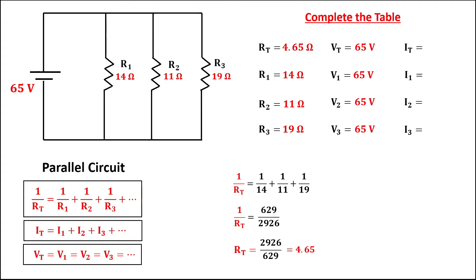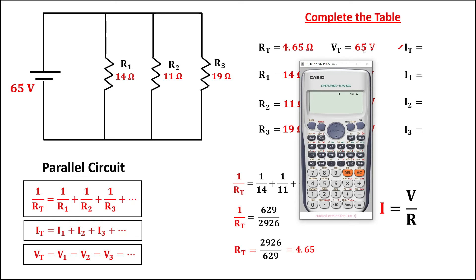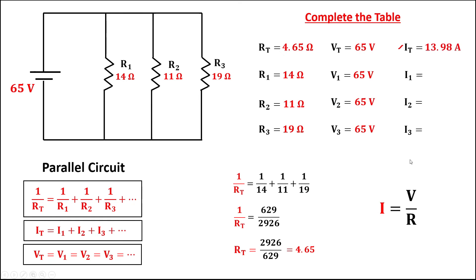Then we can solve now for the currents using this formula: current is equal to the voltage divided by the resistance. So for the total current, we have 65 divided by 4.65 equals 13.98 amperes.